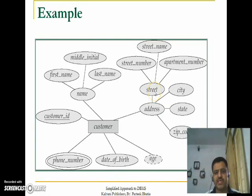Address is also Composite, which can be divided into Street, City, State, and Zip Code. Street can further be divided into Street Number, Street Name, and Apartment Number. Phone Number is a Multi Value Attribute. Date of Birth is a Stored Attribute, but Age is Derived because it is derived from Date of Birth.